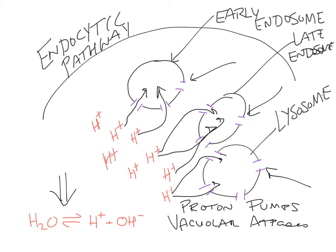You might be asking, where do these protons come from? Well, you are bathed in 70% water, so your cytosol has water, and water is always in equilibrium between protons and hydroxide ions. There are lots of protons around, and they can easily get into the lumen of these organelles and lower the pH. The pH outside the cell is approximately 7. When you get into an early endosome, the pH is approximately 6.5. When you get to a late endosome, 5.5, and the lysosome is less than 4.5. These proton pumps use energy — that's why they're also called vacuolar ATPases — it requires energy to pump against the gradient.